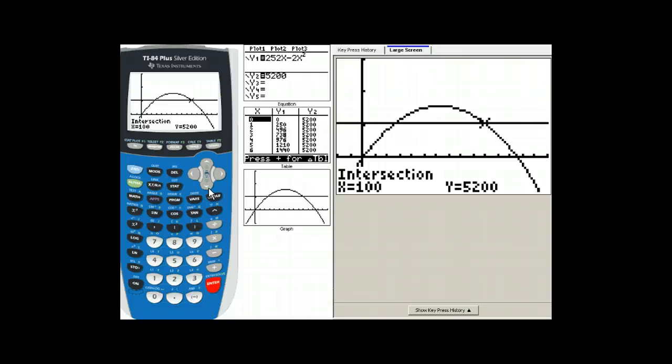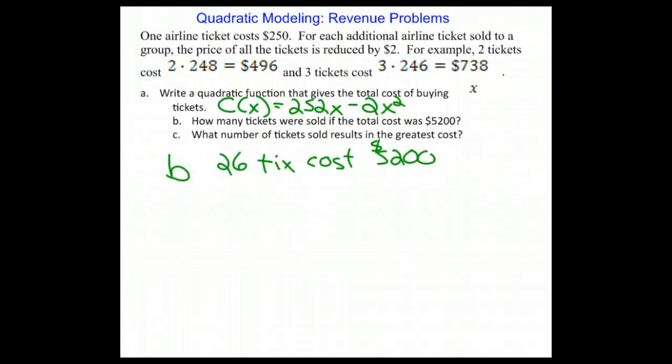100 tickets also cost $5,200. Updating my score sheet. 100 tickets cost $5,200.